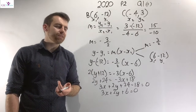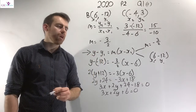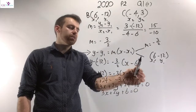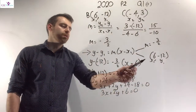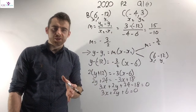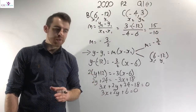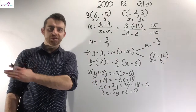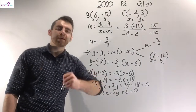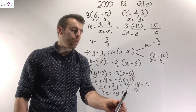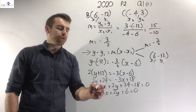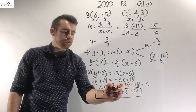Once I've worked out the slope of BC, I'm happy to sub into the equation. The slope is minus 3 over 2 and I used point B, which is (6, −12), though I could have used point C. I subbed in the point and slope and simplified. When using the perpendicular distance formula you need everything on one side of the equation, so I moved everything to the left-hand side where they're all positive. The equation of BC is 3x plus 2y plus 6 equals 0.